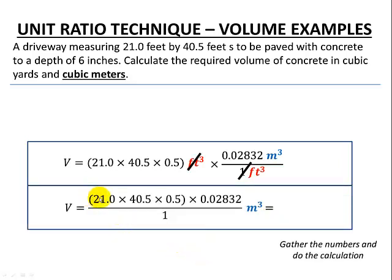Let's gather all our numbers together. So there's our dimensions, length, width, and height. There's our 0.02832 and just dividing by 1. So our overall answer in cubic meters is to 2 decimal places, 12.04 meters cubed.